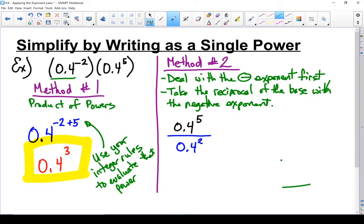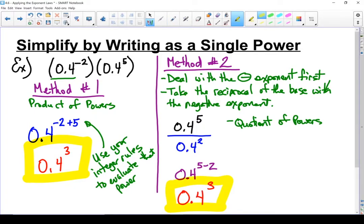Now we can solve this using quotient of powers. My base is the same: 0.4. The exponent on my numerator is 5, the exponent on the denominator is 2, so I'm going to subtract that 2. Five minus 2 gives me 3, so my rewritten term is 0.4 to the power of 3. Exact same answer we got before, we just got there using a different method. Either will work.